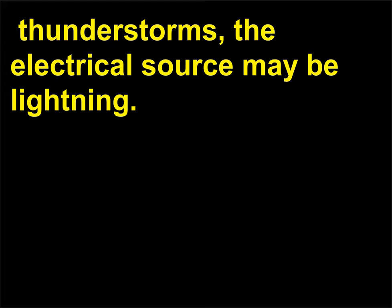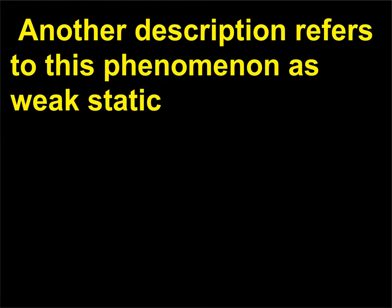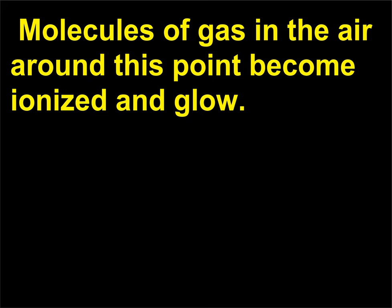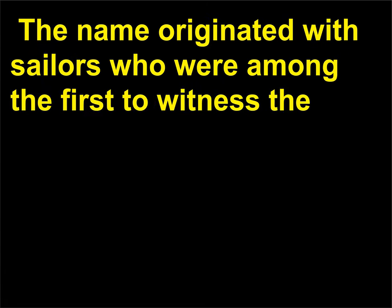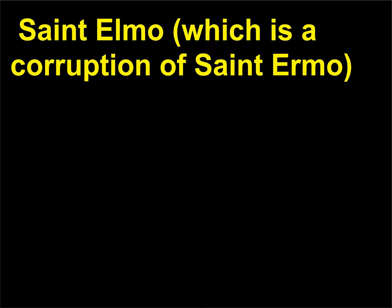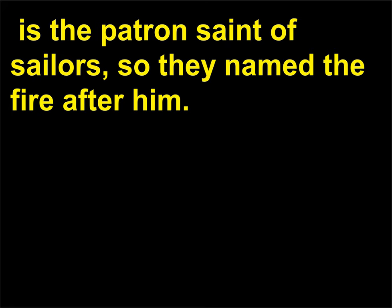Saint Elmo's fire is another electrical phenomenon — weak static electricity formed when an electrified cloud touches a high exposed point. Molecules of gas in the air around this point become ionized and glow. The name originated with sailors who were among the first to witness the display of spear-like or tufted flames on the tops of their ships' masts. Saint Elmo, which is a corruption of Saint Irmo, is the patron saint of sailors, so they named the fire after him.